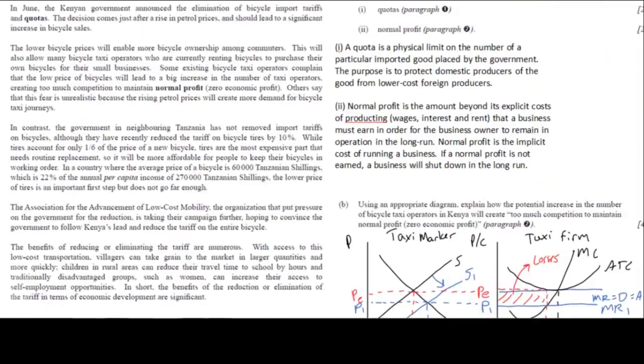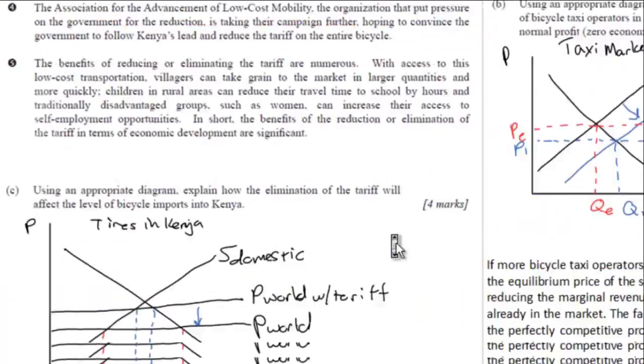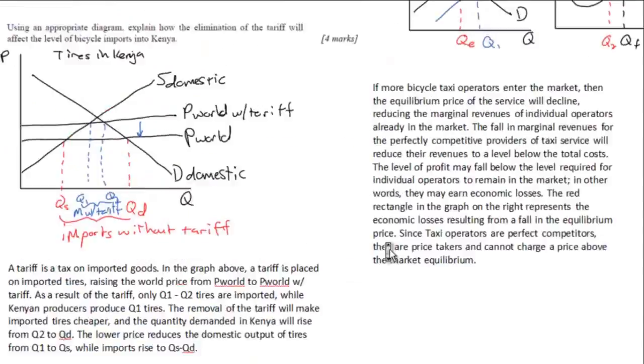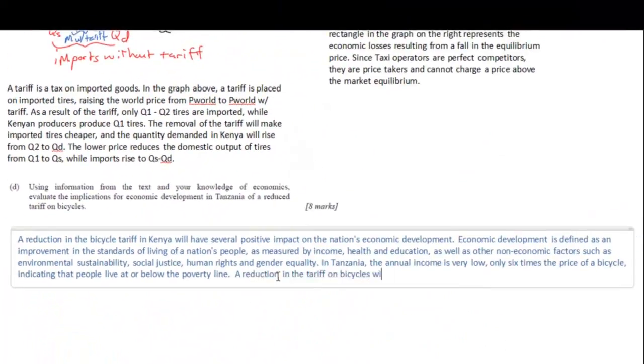But then I went on to define economic development before returning to the article to look for evidence of the lack of development in Tanzania before the removal of the tariff. So I'm referring to the income, how low it is. It's only six times the price of a bicycle. Now I'm going to find some more evidence. I talk about the fact that the lower tire prices does not do enough to improve the access to bicycles.